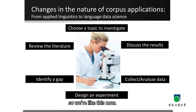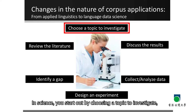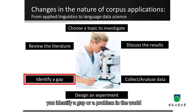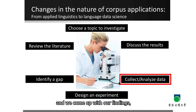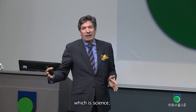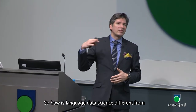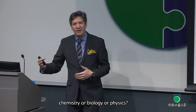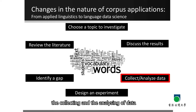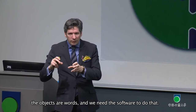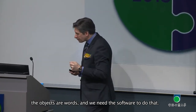In science, you start out by choosing a topic to investigate. Then you review the literature, identify a gap or problem in what we know today, design an experiment to solve this problem, collect the results, analyze the data, and come up with your findings — that's what science is all about. How is language data science different from chemistry, biology, or physics? Well, first we're looking at words, and collecting and analyzing data with words is quite different. The objects are words, and we need software to do that.